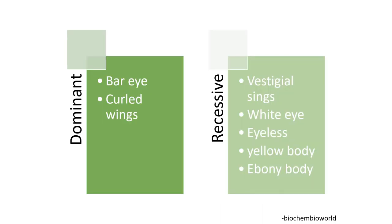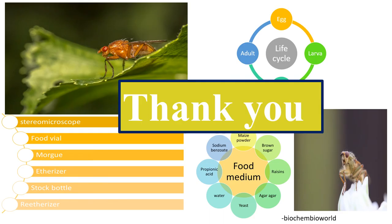This slide shows the characteristics of some of the mutants. The characteristics dominant to the wild type are barred eye and curled wings. The recessive characteristics to the wild type are vestigial wings, white eye, eyelids, yellow body and ebony body. Thank you so much for watching my video — Biochem BioWorld.